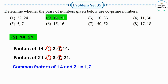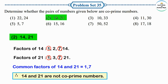So are 14 and 21 co-prime numbers? No. Therefore, 14 and 21 are not co-prime numbers, because apart from 1, the number 7 is also a common factor of 14 and 21.